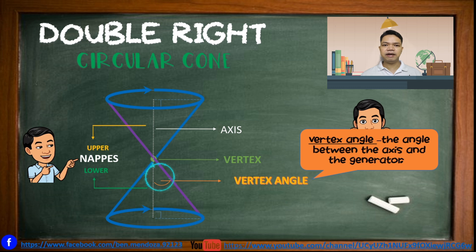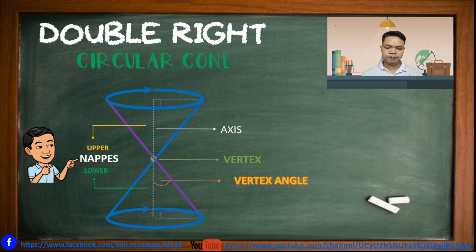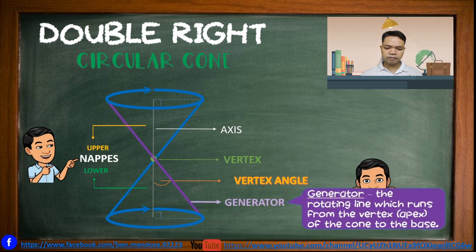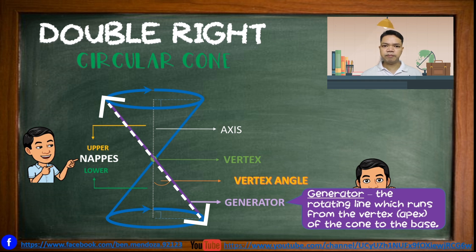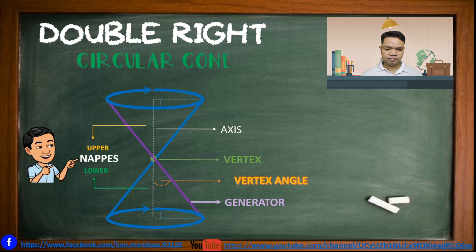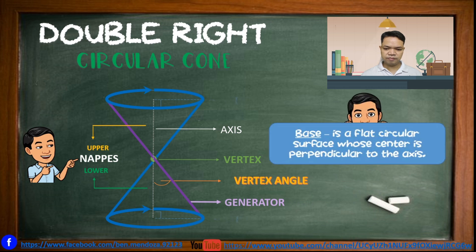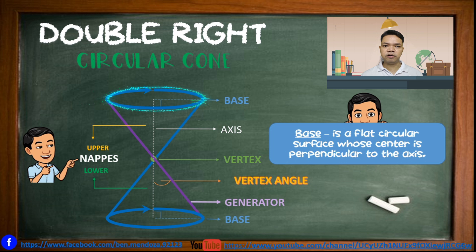The vertex angle is the angle between the axis and the generator. The generator is the rotating line which runs from the vertex of the cone to the base. The base is the flat circular surface whose center is perpendicular to the axis.